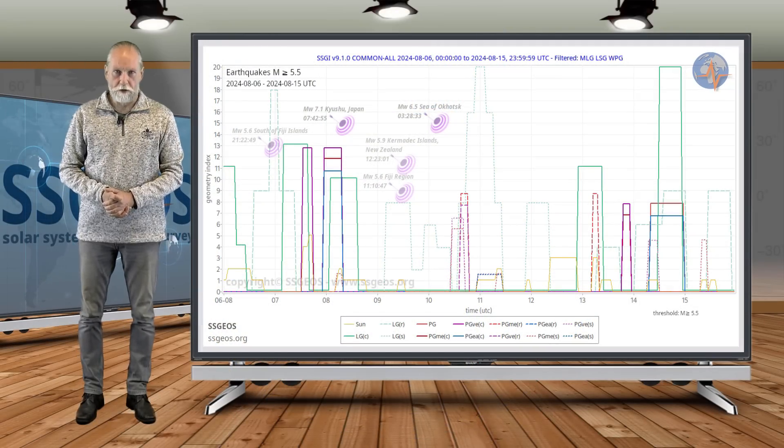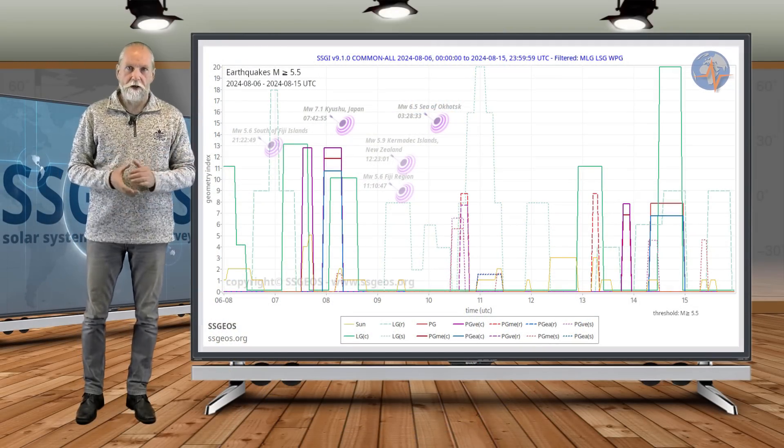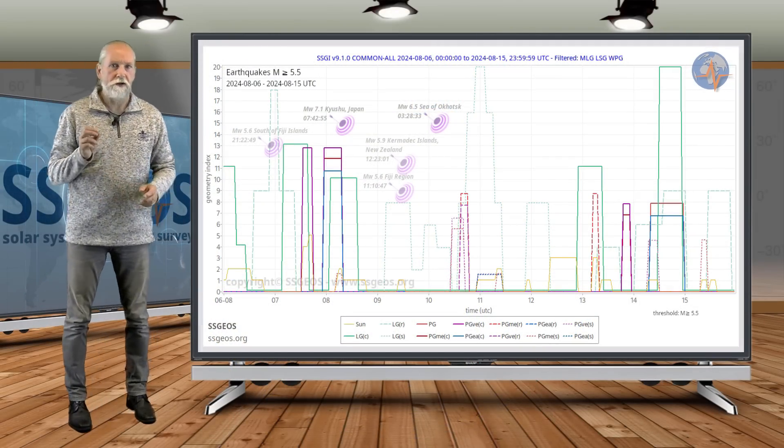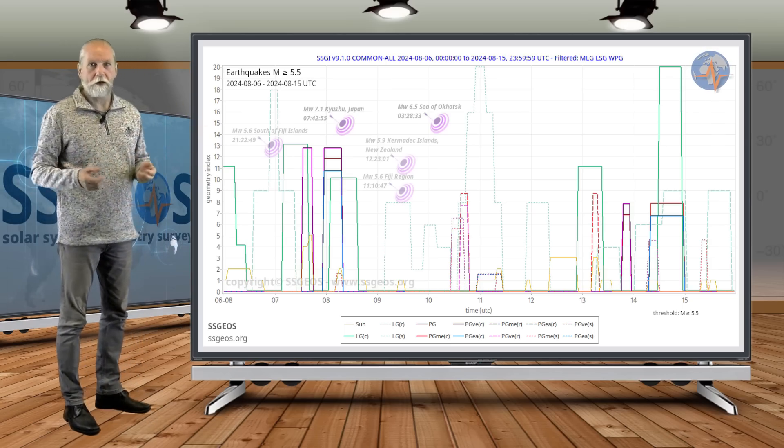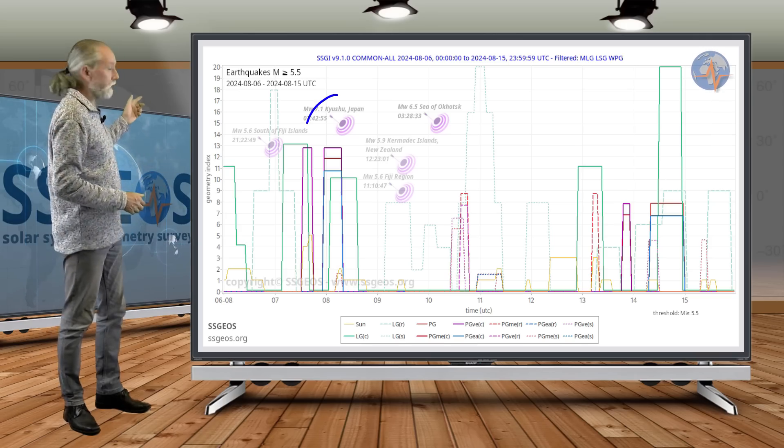Welcome to a new planetary and seismic update. In the previous update we mentioned the possibility of a magnitude 7 earthquake around the 9th, and if you look at the SGI graph with magnitude 5.5 and larger earthquakes of this previous time frame, we see that indeed